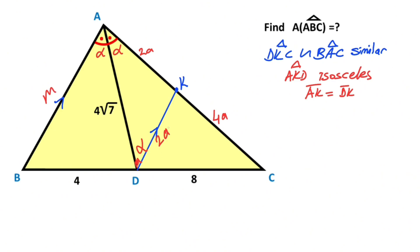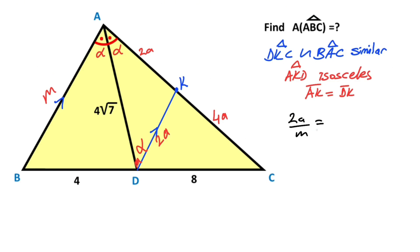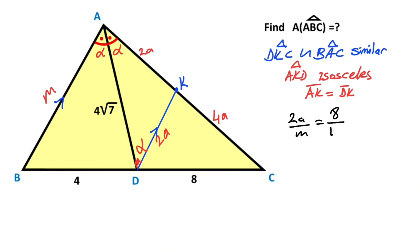Therefore this length is also 2a. Let's call this segment m. We know that the ratio of 2a over m must be equal to the ratio of 8 over 12. If we simplify the expression, m is going to be 3a.